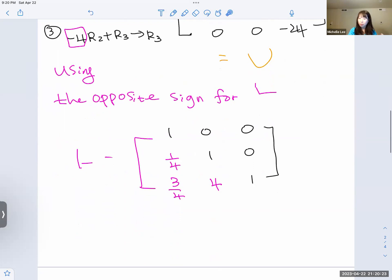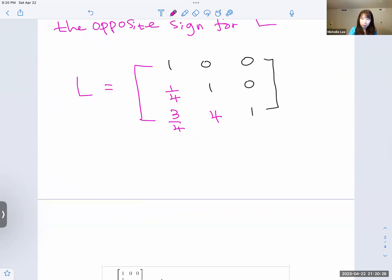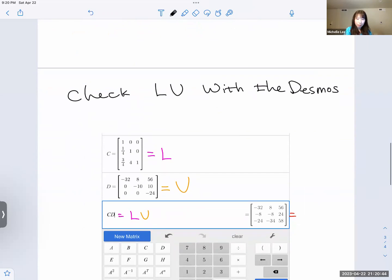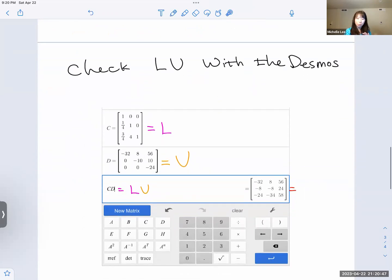Check the answer. I have here. In Desmos, we cannot use L. We cannot use U. So I was using C and D. So this is L. This is U. We multiply. Then we get this one, which is A. Thank you for watching.